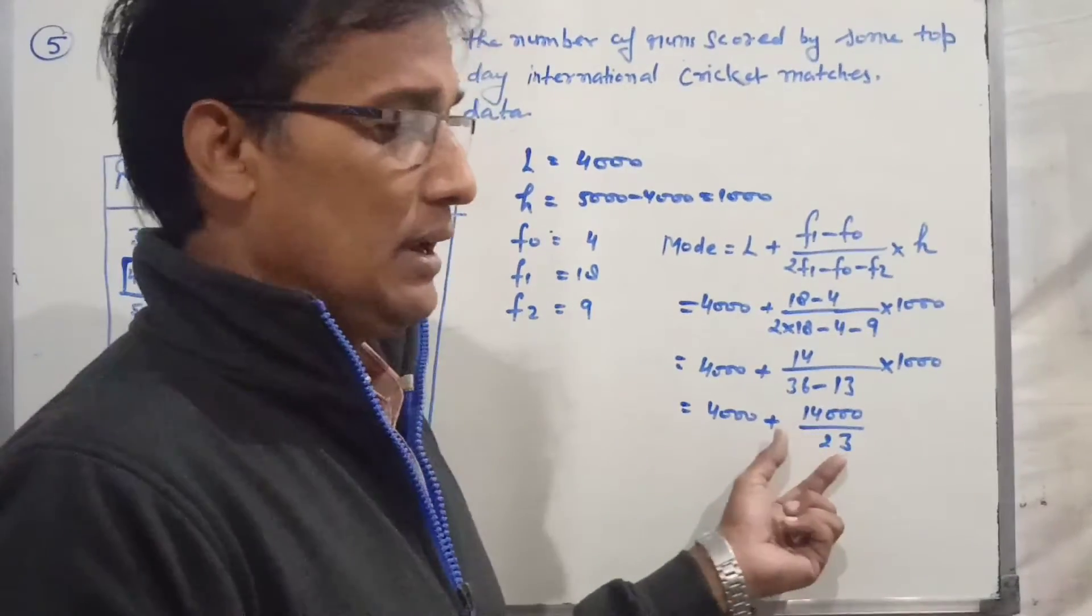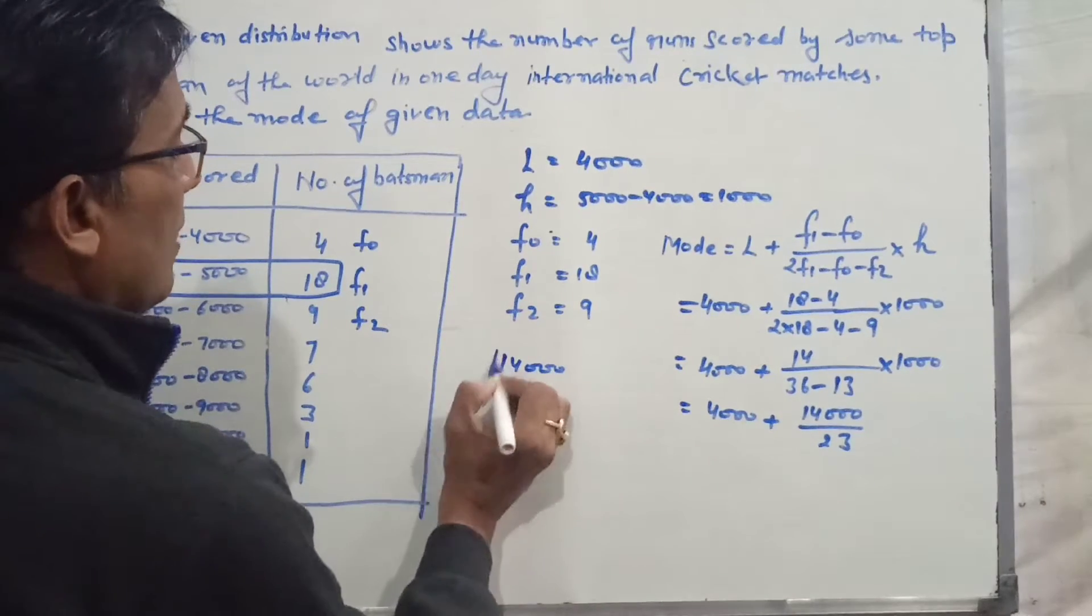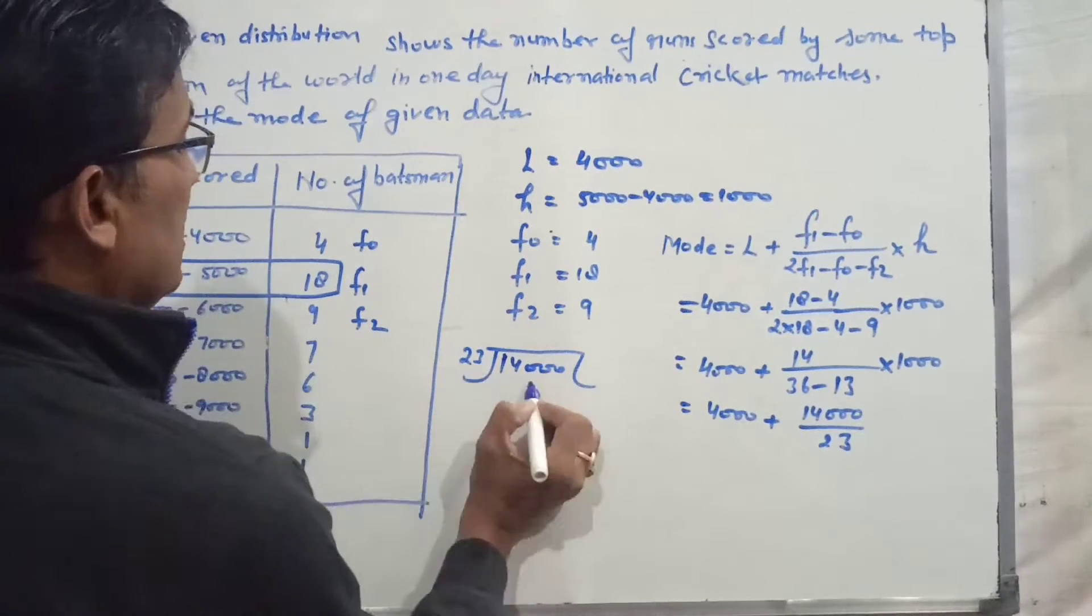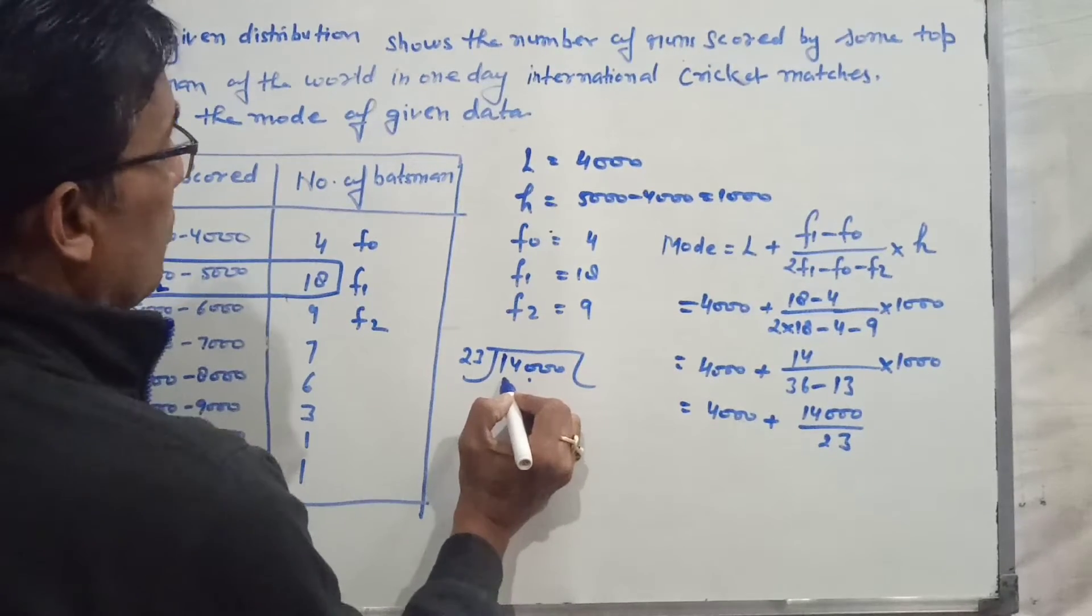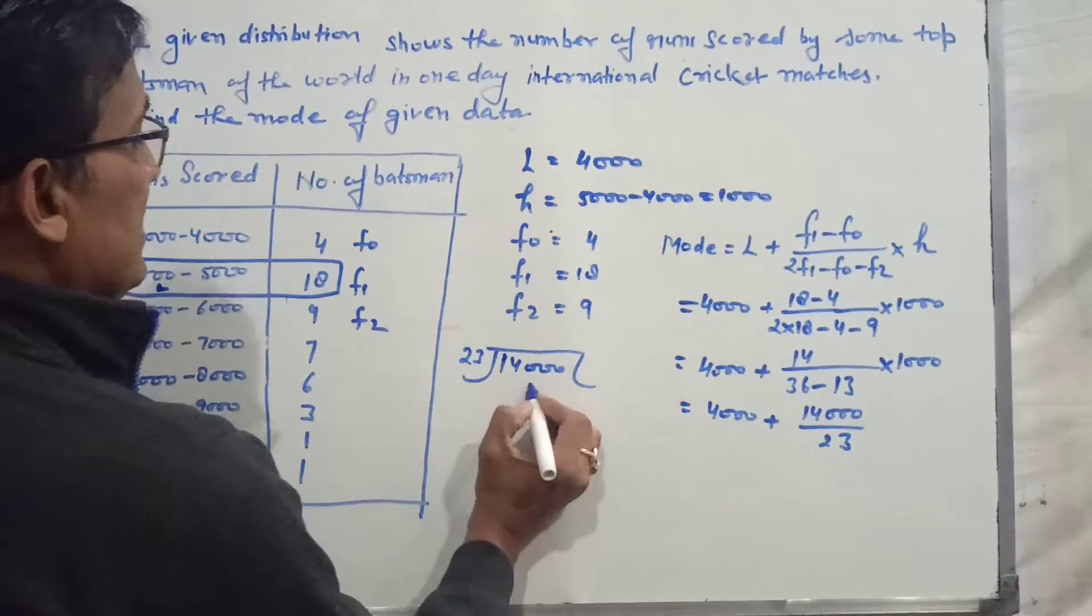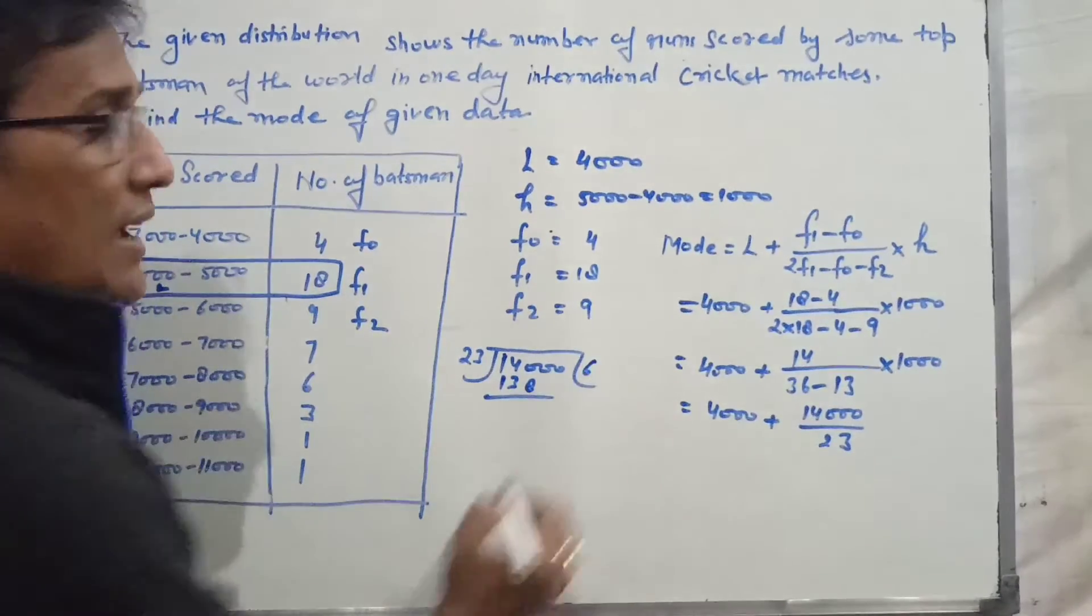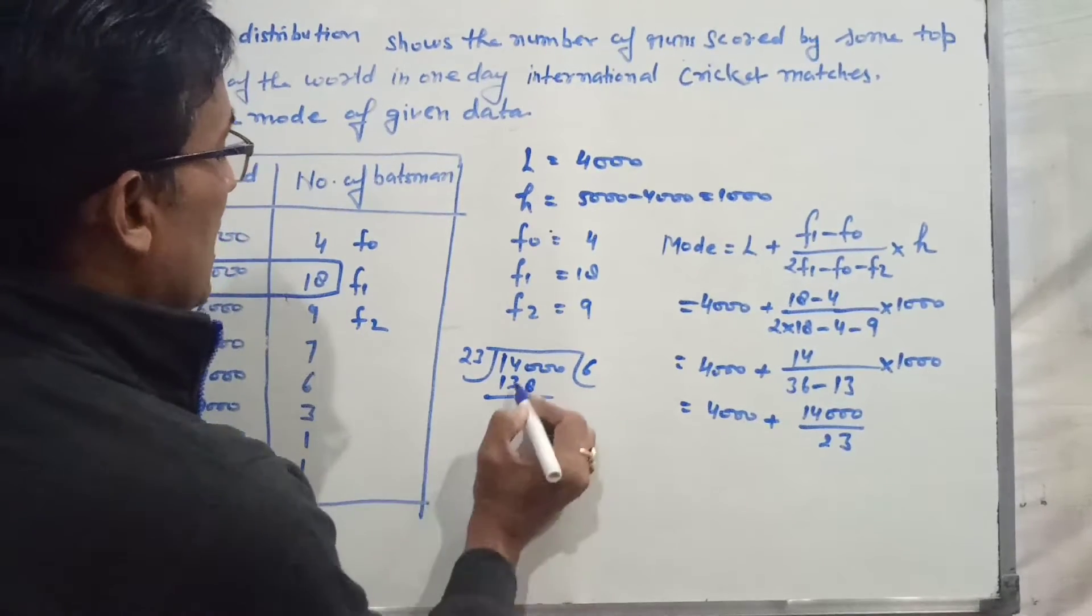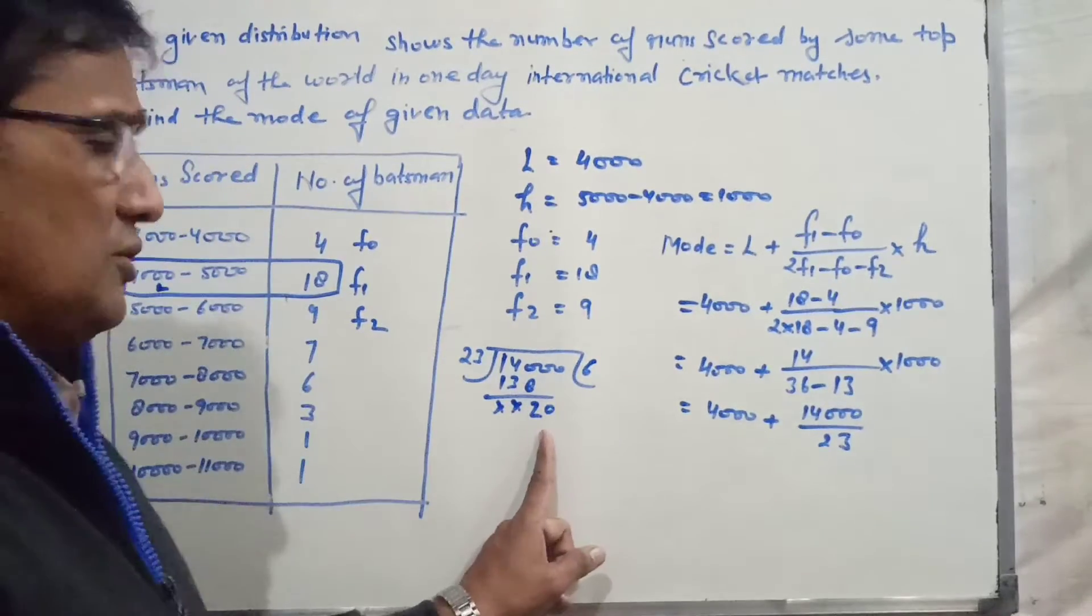Now dividing 14 by 23. Performing the long division: 4 times 3 equals 12, 4 times 2 equals 8, gives 9. 5 times 3 equals 15, 5 times 2 equals 10, gives 11. 6 times 3 equals 18, 6 times 2 equals 12, gives 13. 10 minus 8 equals 2, giving 20.